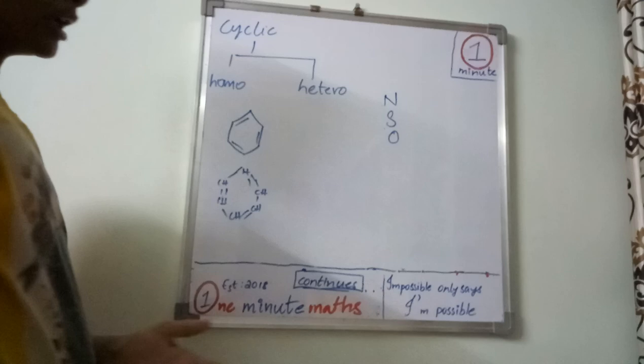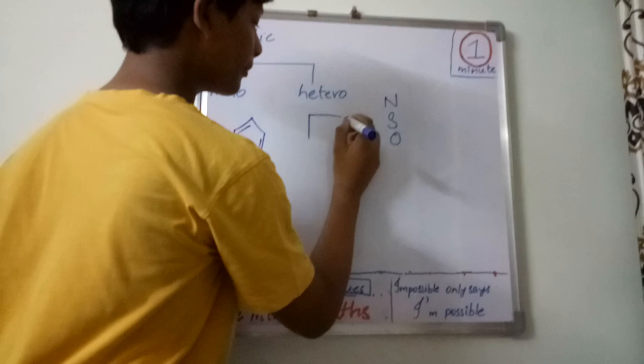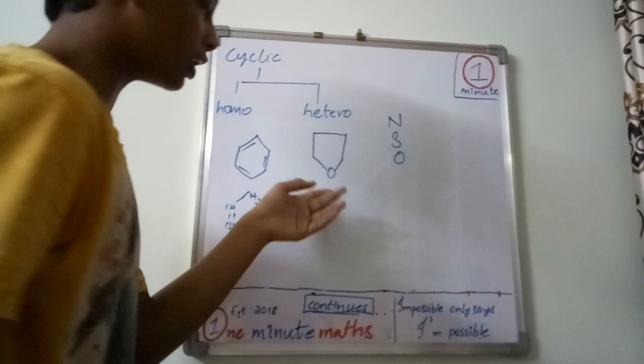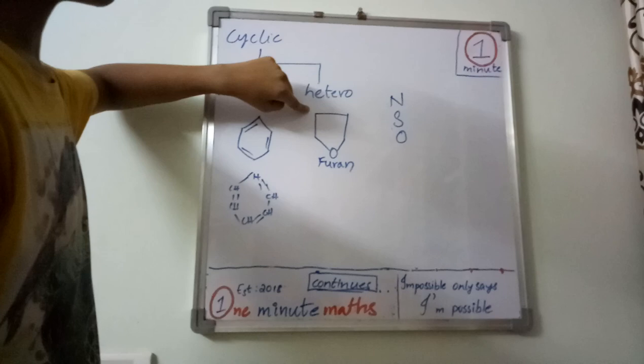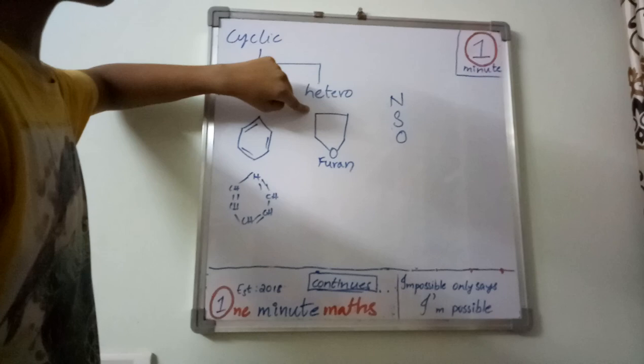You can see this compound is generally called as furan. Here we can see oxygen atom present in this, so it gets called as heterocyclic compound. We can also express in other way.